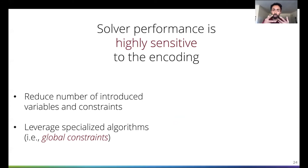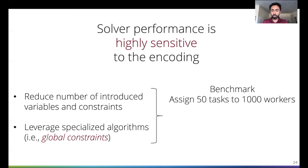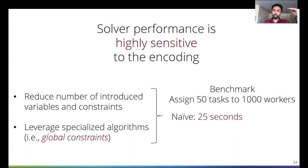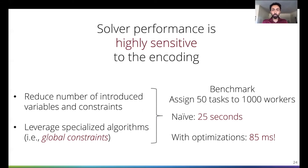When going from high-level SQL to low-level Java code, we try to avoid introducing unnecessary variables and constraints, because that affects the size of this graph. We try to frame problems in terms of global constraints, which are recipes for constraint satisfaction problems for which solvers implement specialized algorithms and propagators. Our compiler embodies these two principles in the form of several code generation strategies and rewrite rules. In a benchmark problem where we assign 50 tasks to 1000 workers, a literal translation of SQL to constraints takes about 25 seconds — uselessly slow. But when we incrementally enable the different features in our compiler that embody these principles, we can bring the runtime down to 85 milliseconds.